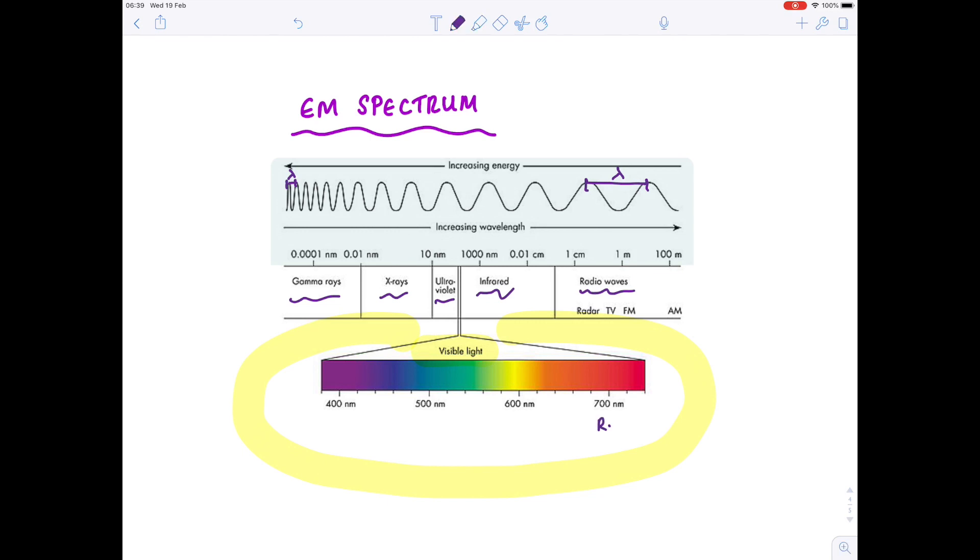Red, over here, at 700 nanometers, has the longest wavelength. Violet, over here, has the shortest wavelength at 400 nanometers. But why is that important for photosynthesis?